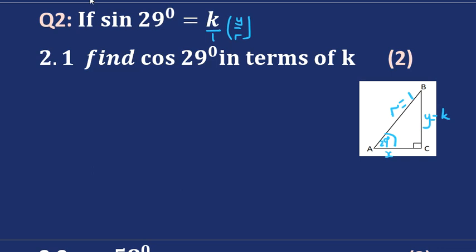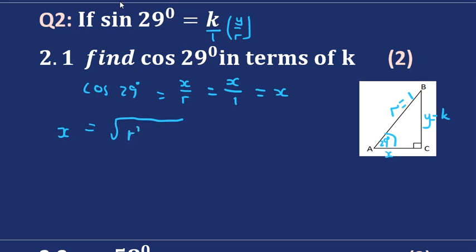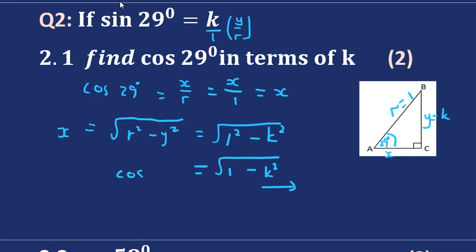For question 2.1, we need to find cosine of 29 degrees, which equals x over r. Since r equals 1, cosine 29 equals x. We find x using the theorem of Pythagoras: x equals the square root of r squared minus y squared. With r squared equal to 1 and y equal to k, we get x equals the square root of 1 minus k squared. So cosine of 29 degrees equals the square root of 1 minus k squared.